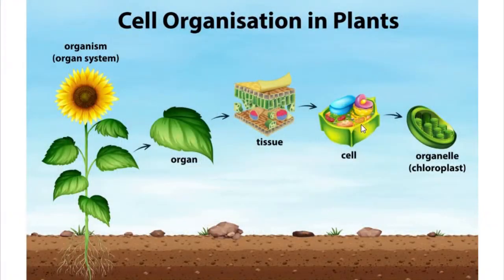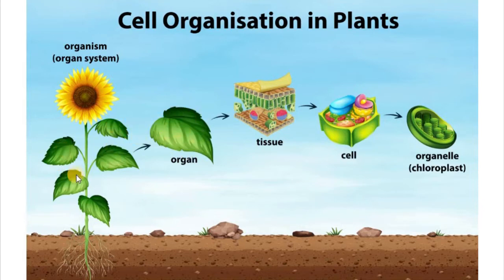With plants we can do the same. We begin with the cell. Many cells together make a tissue. Many tissues together make an organ — in this case a leaf. A leaf is an organ. Several organs together can make a system: the stem, the leaves, and the roots make a system. And all the systems together make the organism — in this case this sunflower.